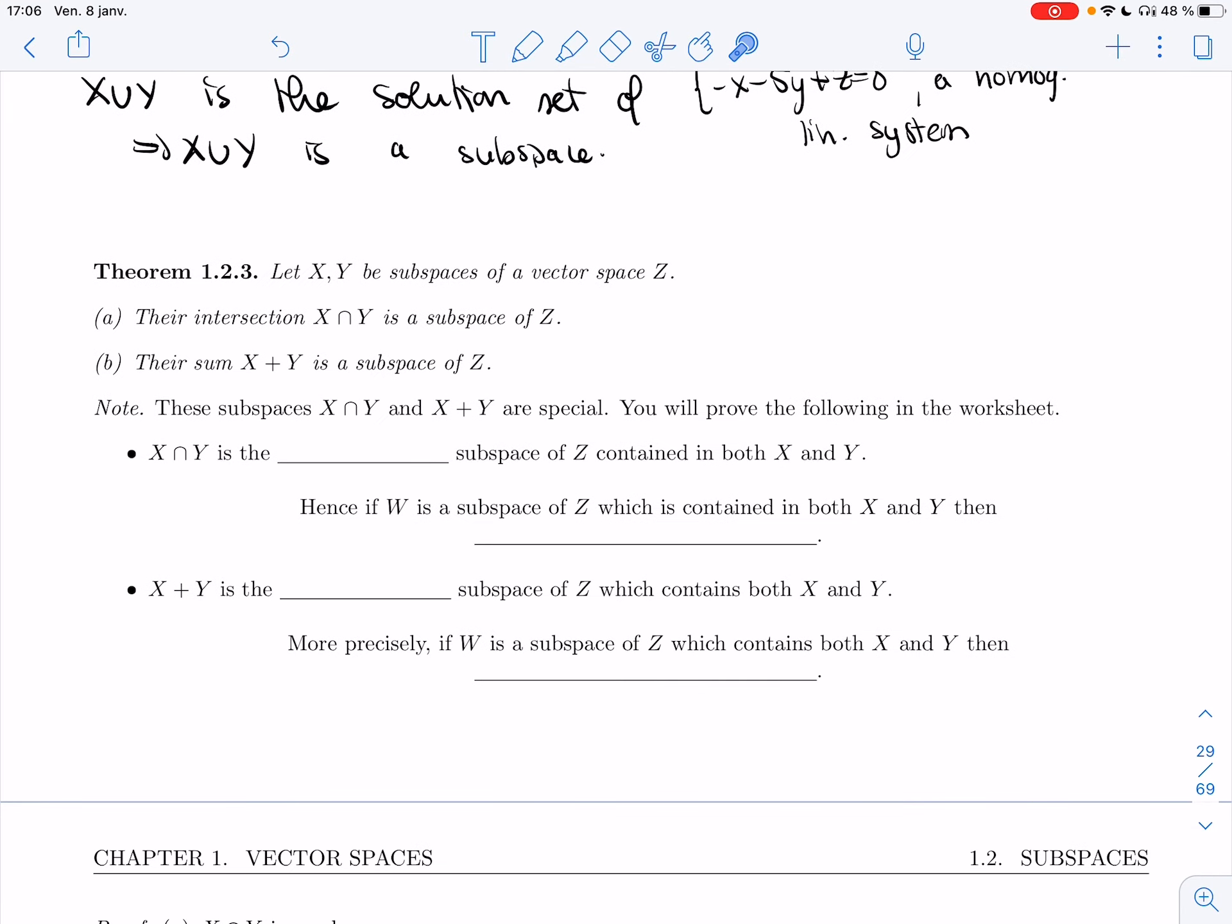So let X and Y be subspaces of vector space Z. Their intersection, X intersection Y, is a subspace of Z. Their sum, X plus Y, is also a subspace of Z.